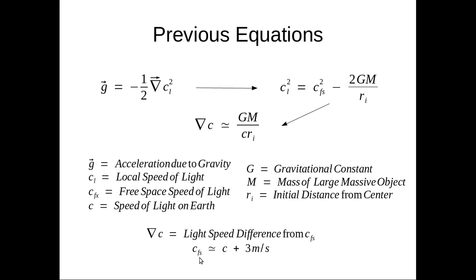In fact, free space light is only about 3 meters per second faster than the speed of light on Earth.